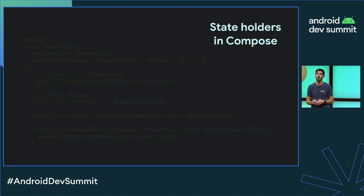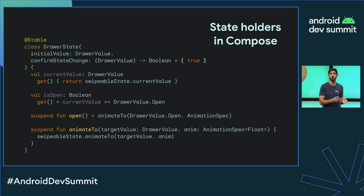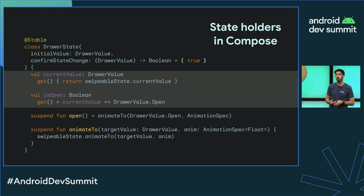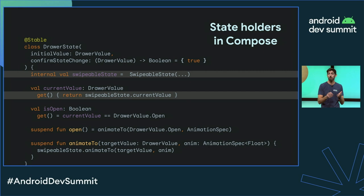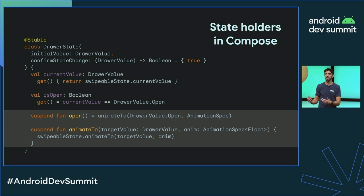Compose has a lot of this in their codebase in the library — that's what we call state holders. We can see the state holder of the Drawer composable function, called DrawerState. State holders can expose state, like whether or not the drawer is open. A nice property of state holders is that they are composable — for example, currentValue gets its value from another state holder defined internally, SwipeableState. They also handle UI logic like opening the drawer or animating to a particular value. You can do the same in your application by creating your own state holders.